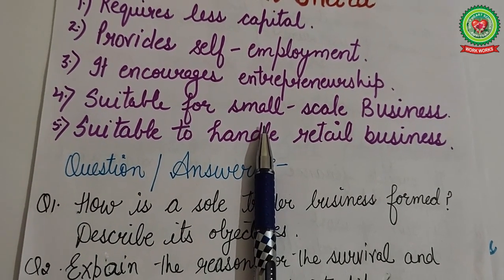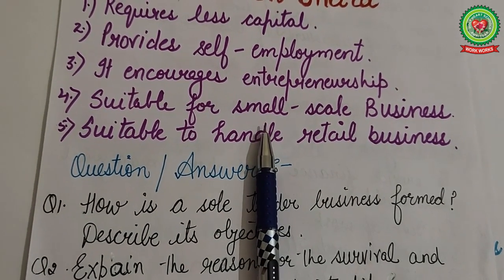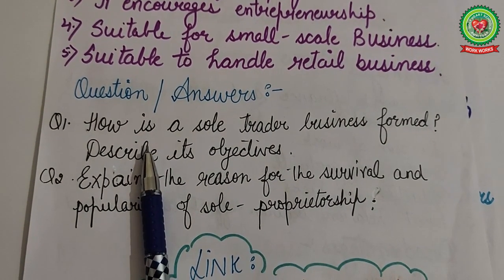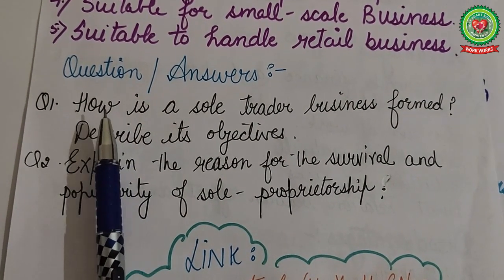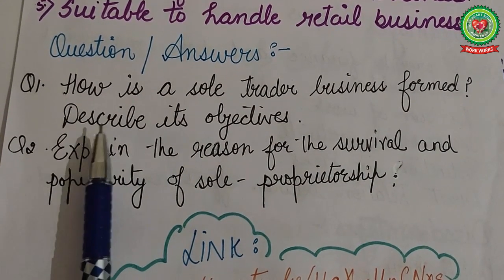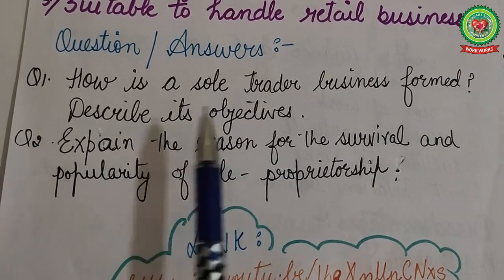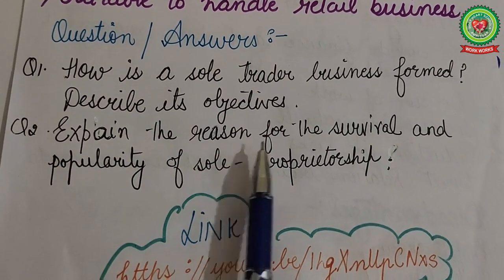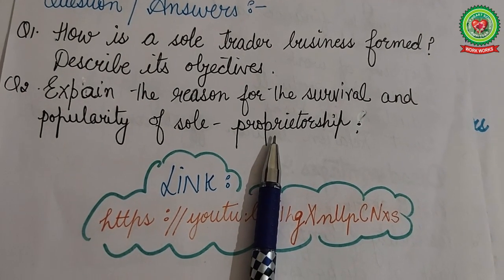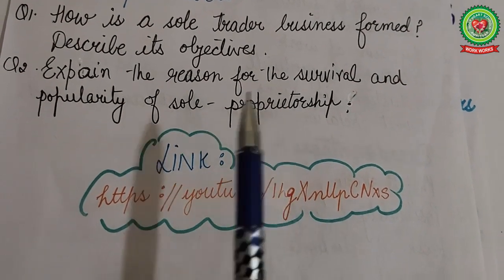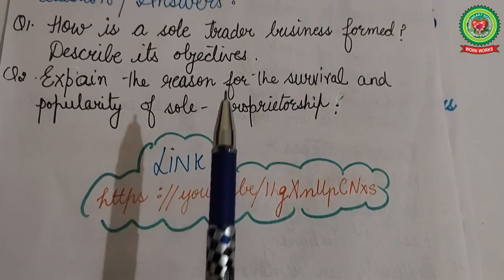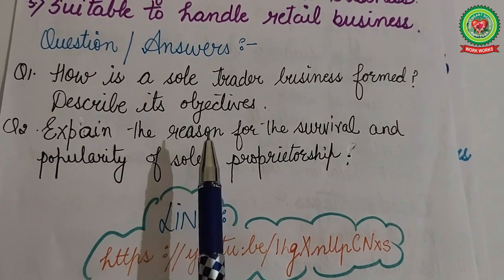This is all about today's topic. Now you have to write answers to the following questions: First, how is sole trade business formed, and describe its objectives? Second, explain the reasons for the survival and popularity of sole proprietorship business in India. There are various links available that you can use to help write the answers to these questions.